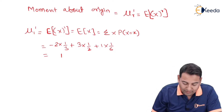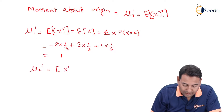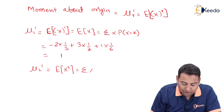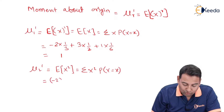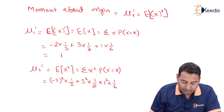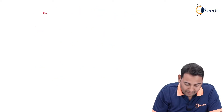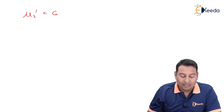Moving on to the next moment, mu two dash is the expectation of x squared, which is the summation of x squared into p of x. That will be minus two squared into its probability, plus three squared into its probability, plus one squared into its probability. If you solve, you will get six. So mu two dash is equal to six.